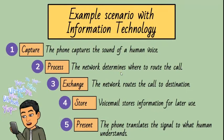Here's an example scenario with information technology. For capture, a cell phone captures the sound of a human voice and converts it into electrical signals. For process, the network equipment determines where to route the call. For exchange, a network routes the call from origination to destination.